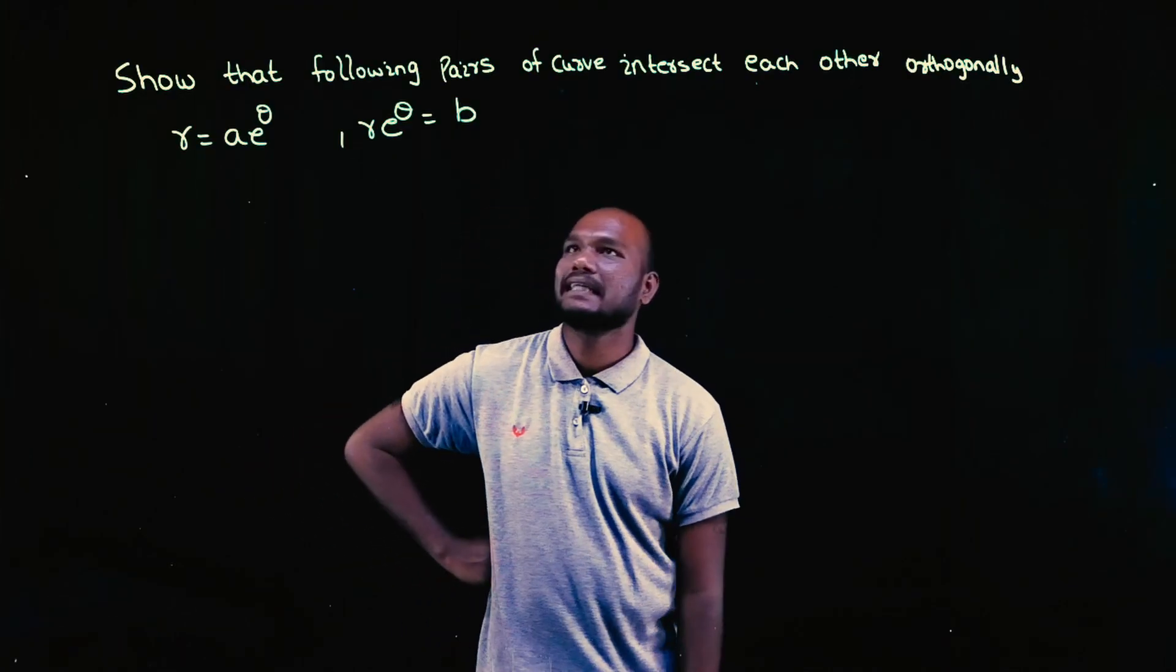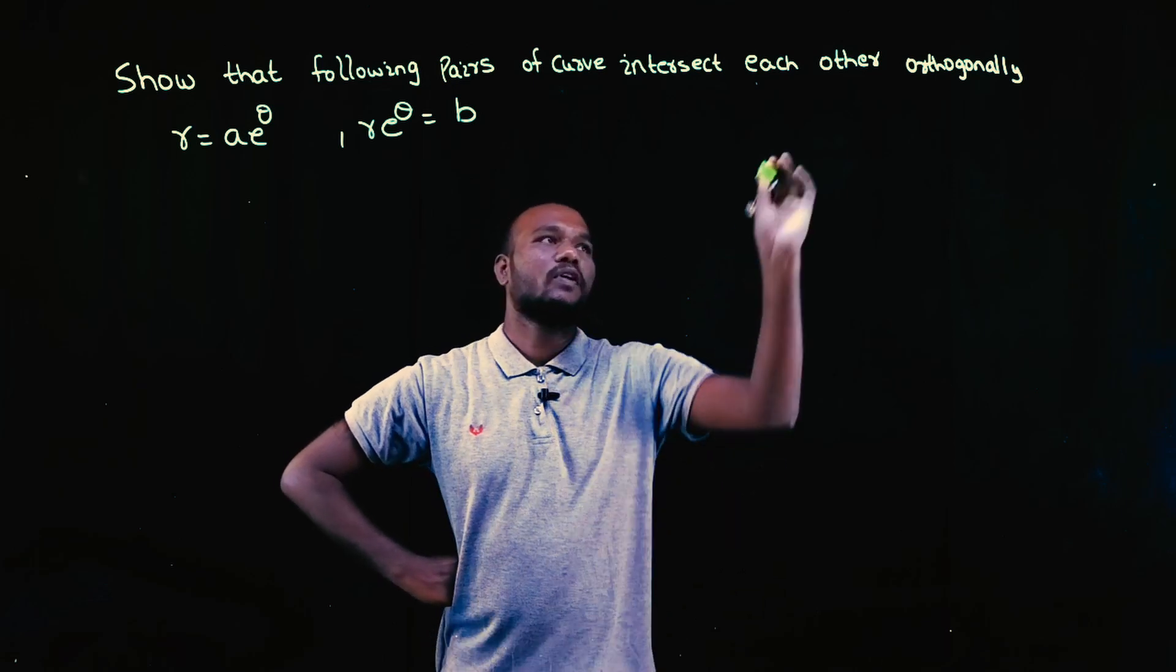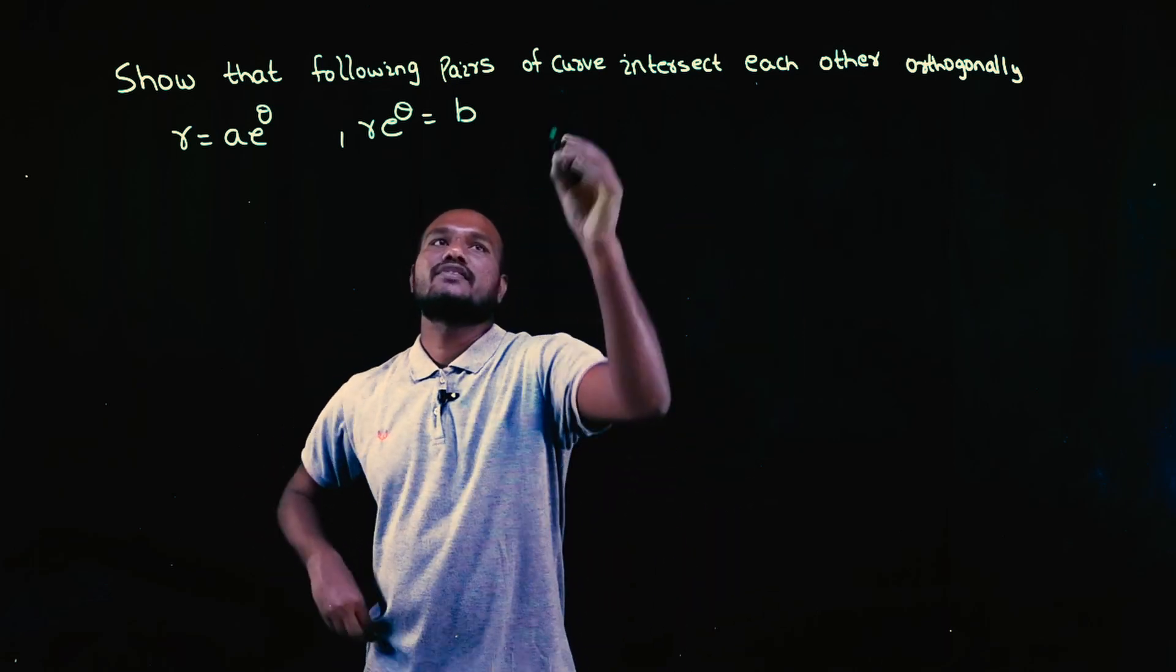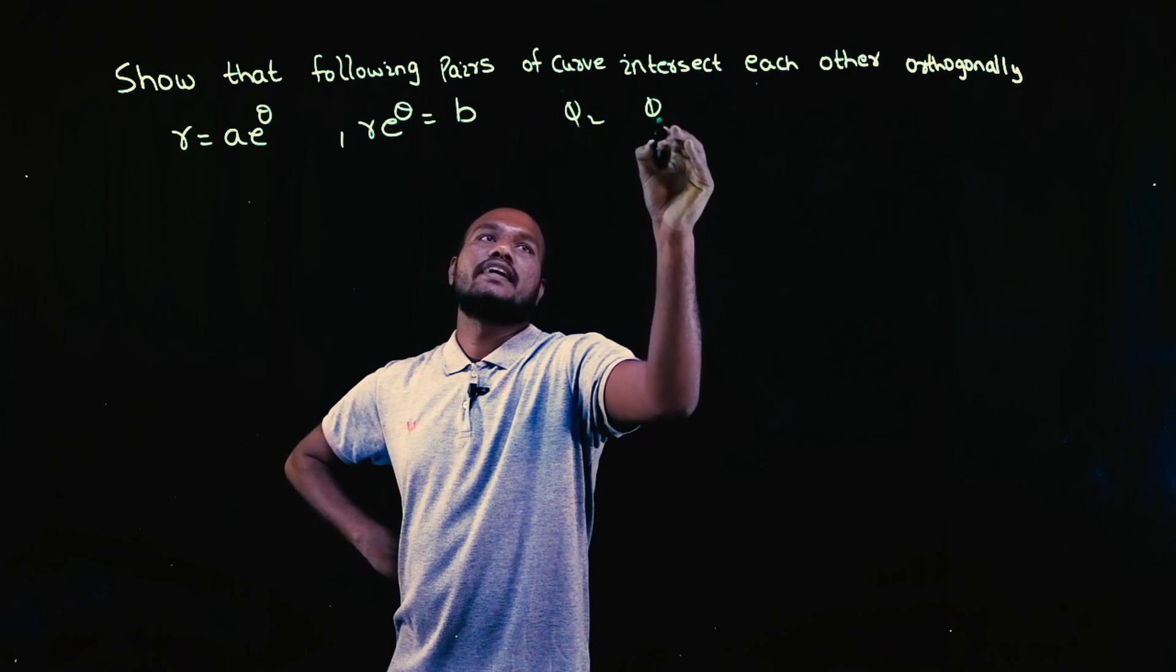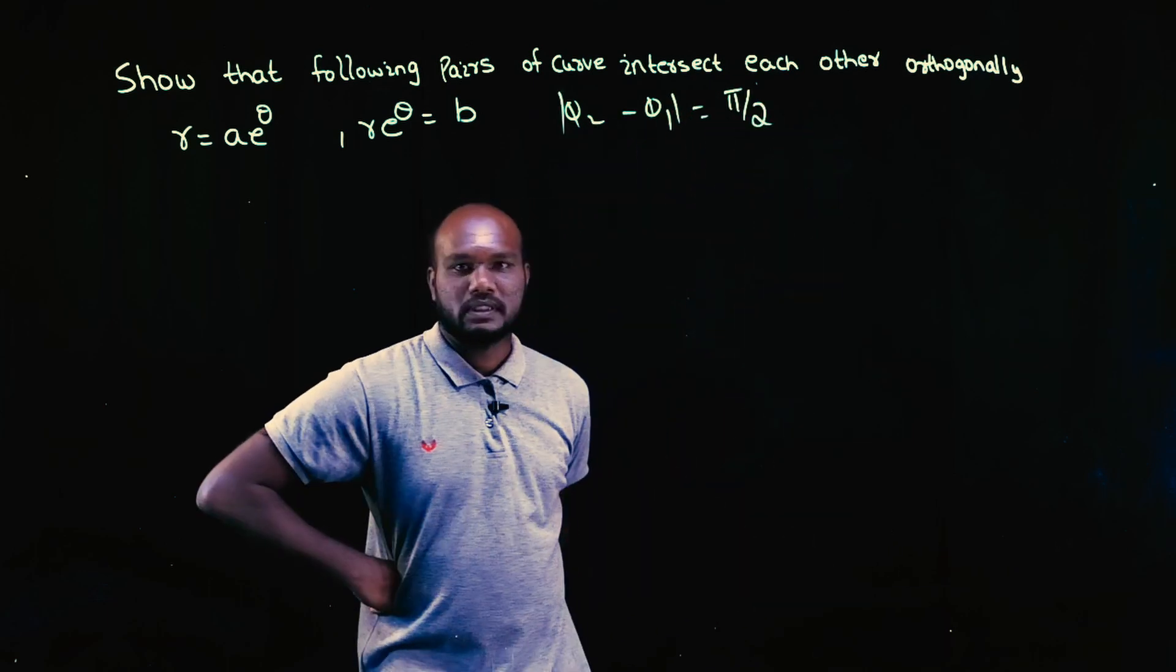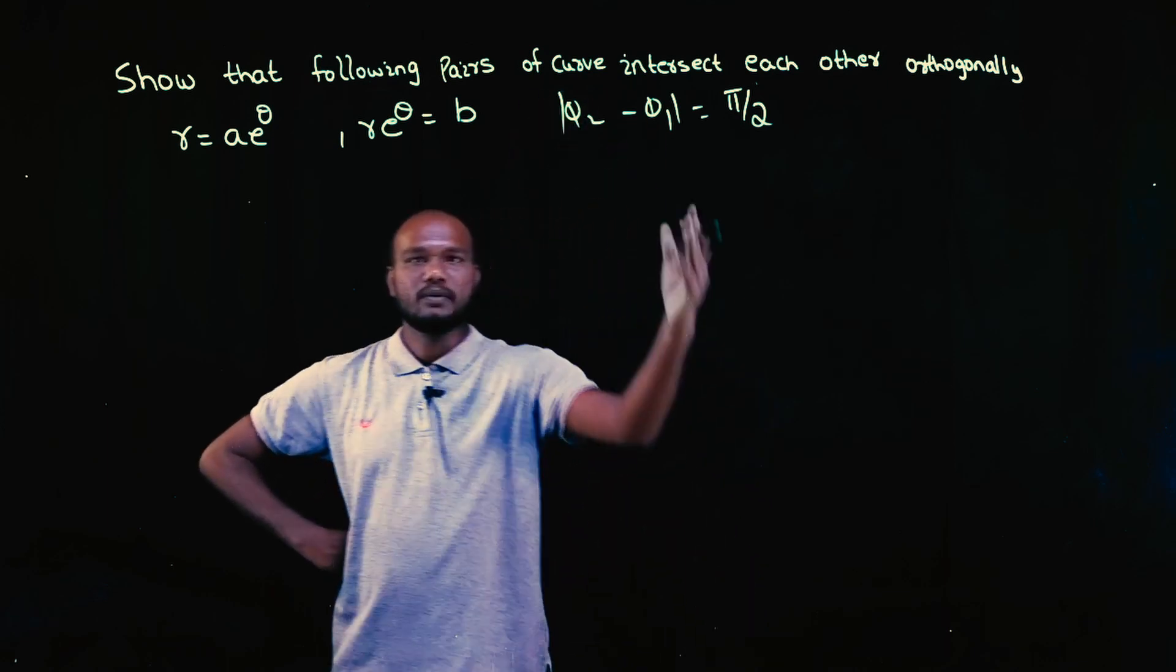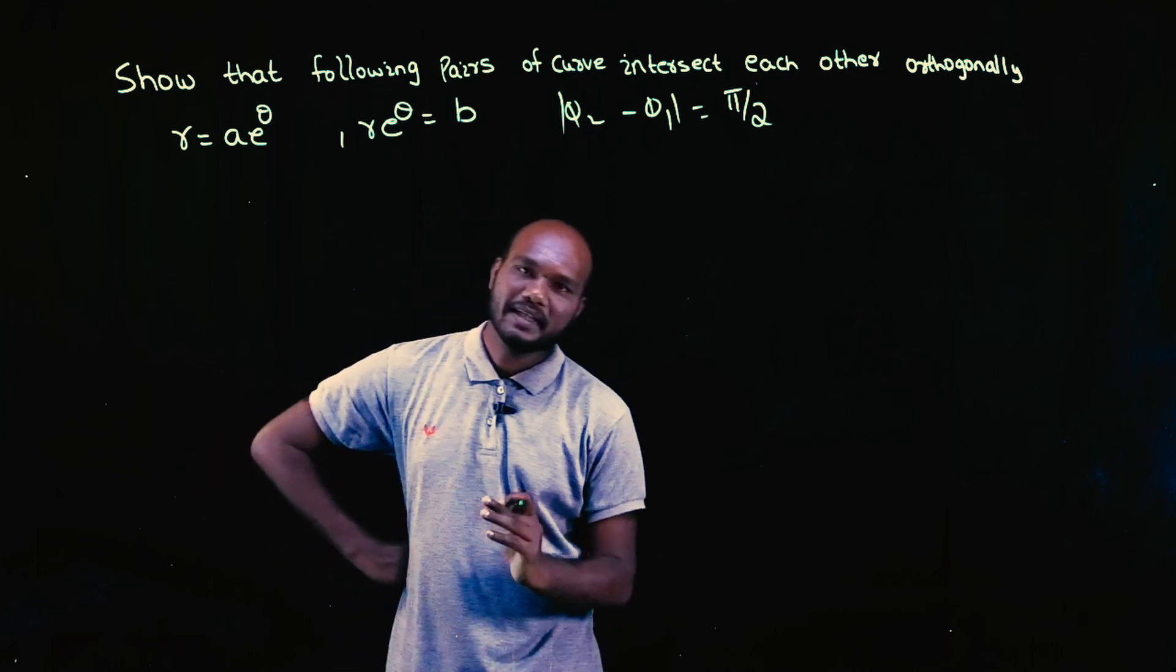What are they asking you? They're asking you that there's a pair of curves, the angle between them should be orthogonal. That means you have to find phi 2 and phi 1, the difference between those angles should be equal to pi by 2. You have to find phi 1, phi 2, and just take the difference—that means just take the negative symbol between them—that should be equal to pi by 2. That is orthogonal intersection.